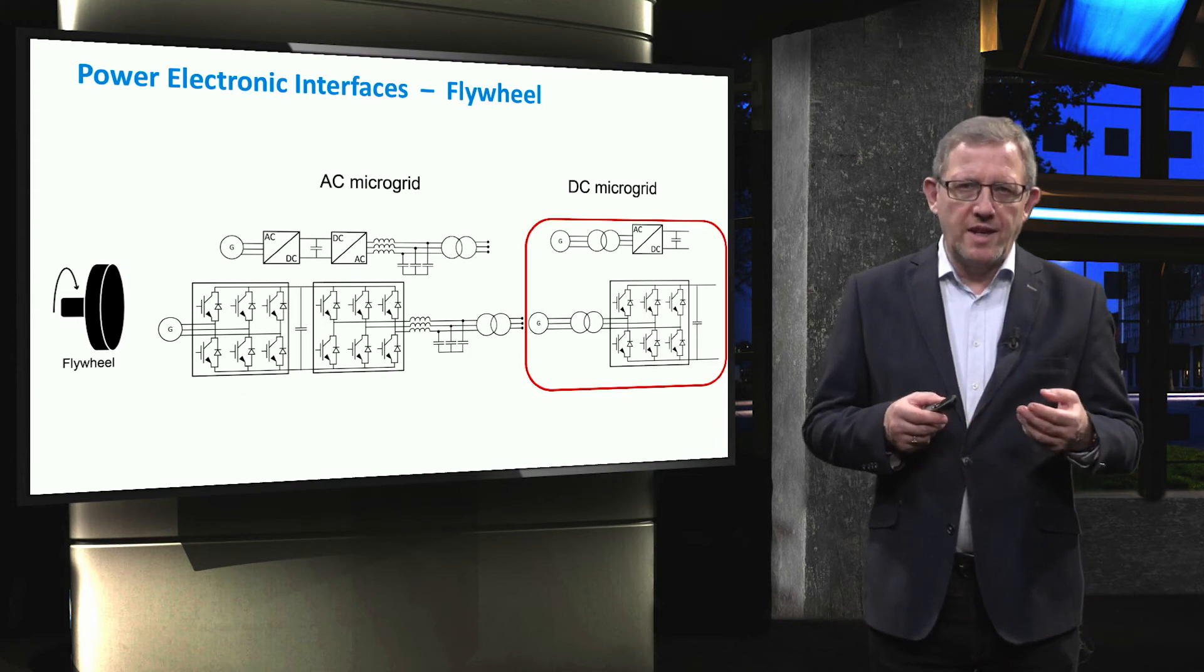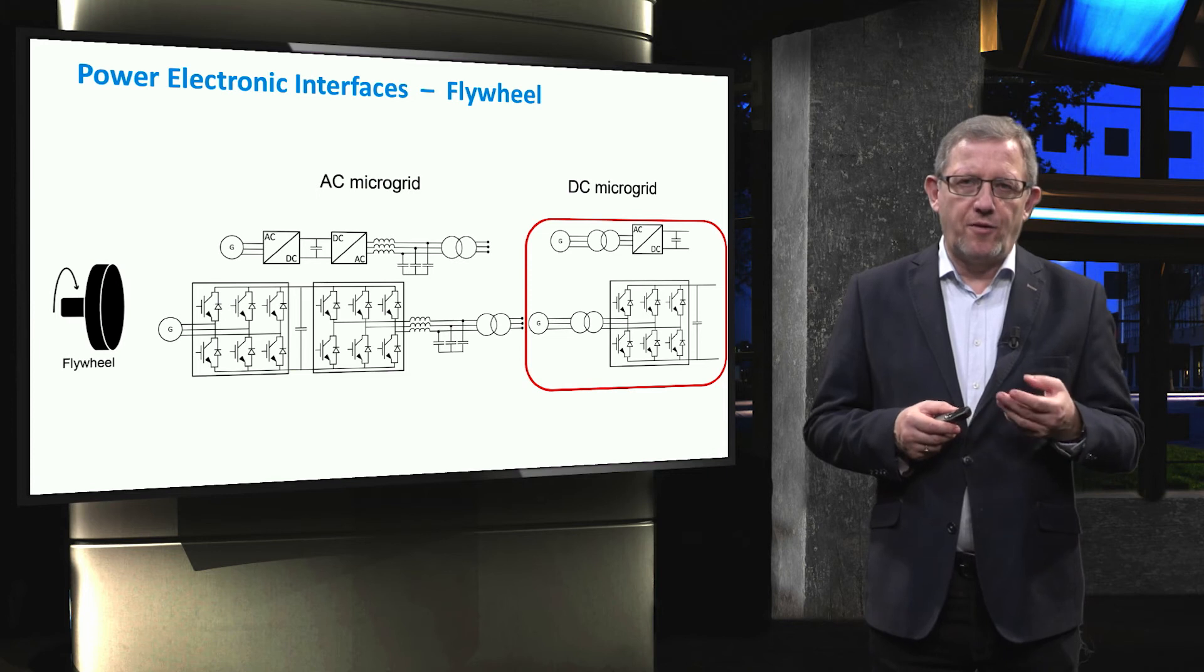To connect a flywheel to a DC microgrid, a three-phase, three-leg AC to DC converter can be used.